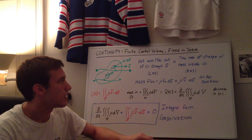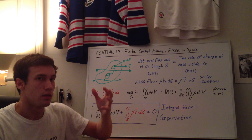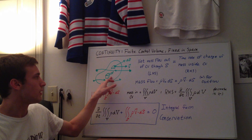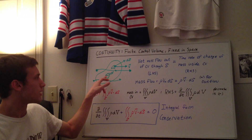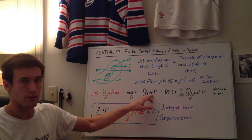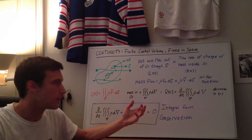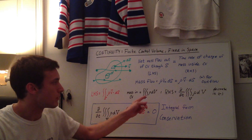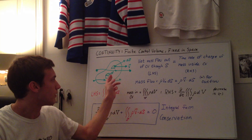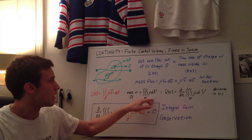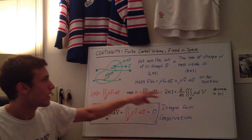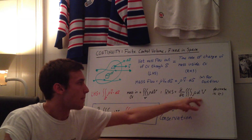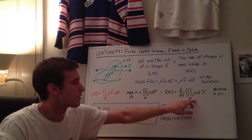Moving on to the right side, we have the time rate of change of the mass inside the control volume. The mass of the fluid element is rho times dV — density times volume gives us kilograms. To get the total mass inside the finite control volume, we integrate over the volume, so we have the triple integral over the volume. This term is the mass inside the control volume, and the right-hand side is its partial time derivative — the time rate of change of mass.